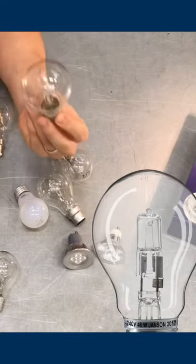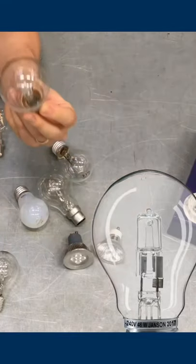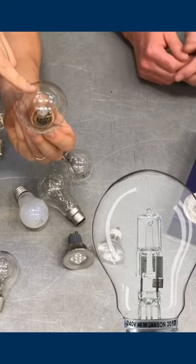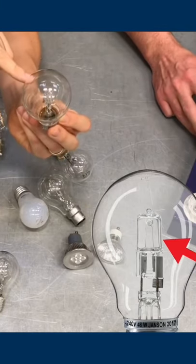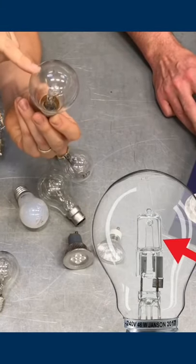We've got here a halogen lamp. Now you'll notice inside this outer glass bulb here we've got a smaller lamp inside there and inside that is